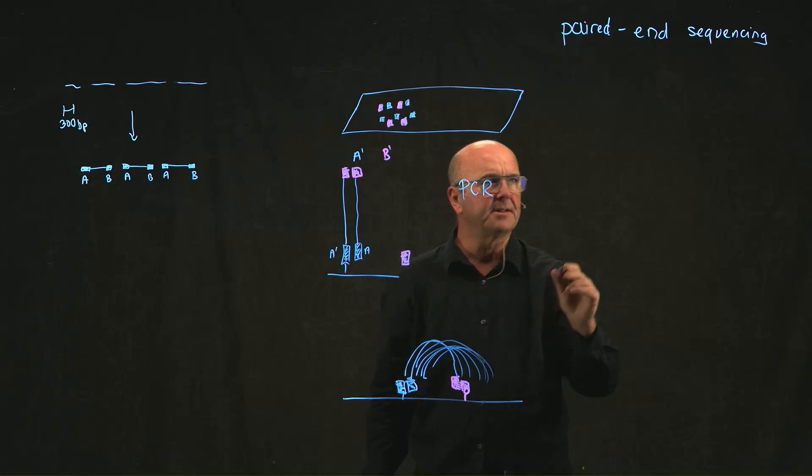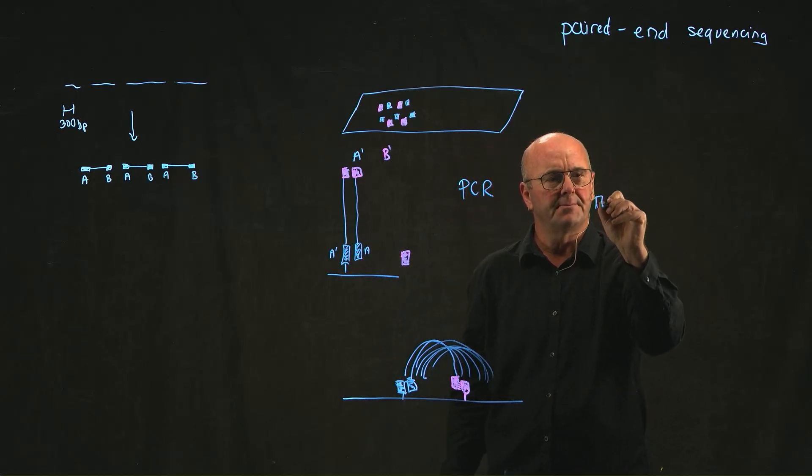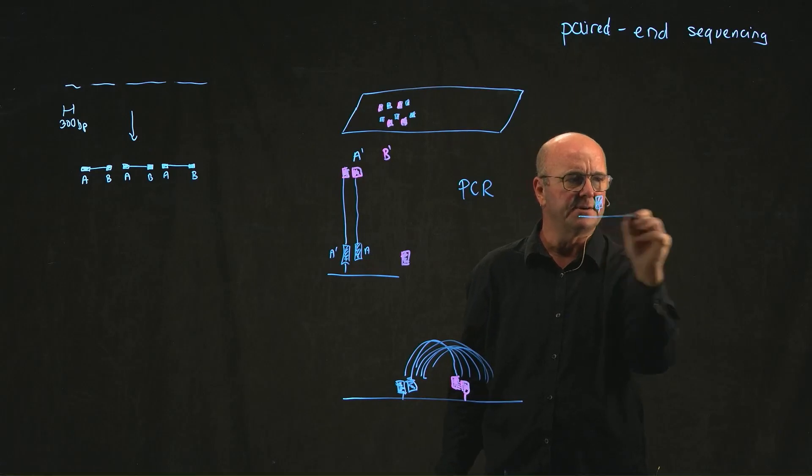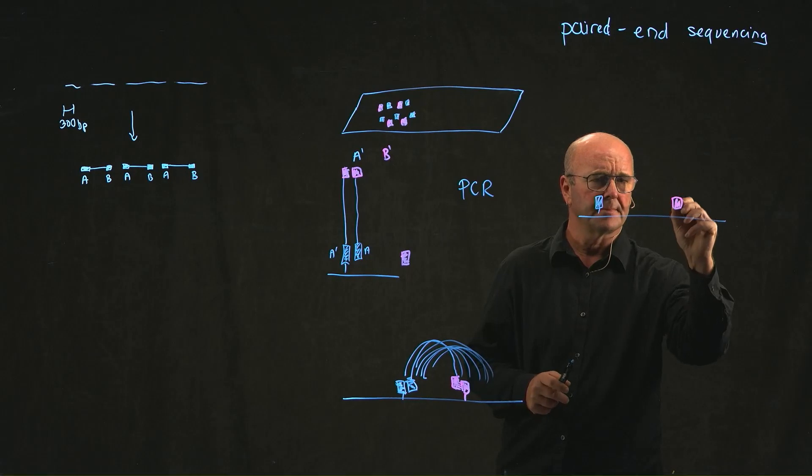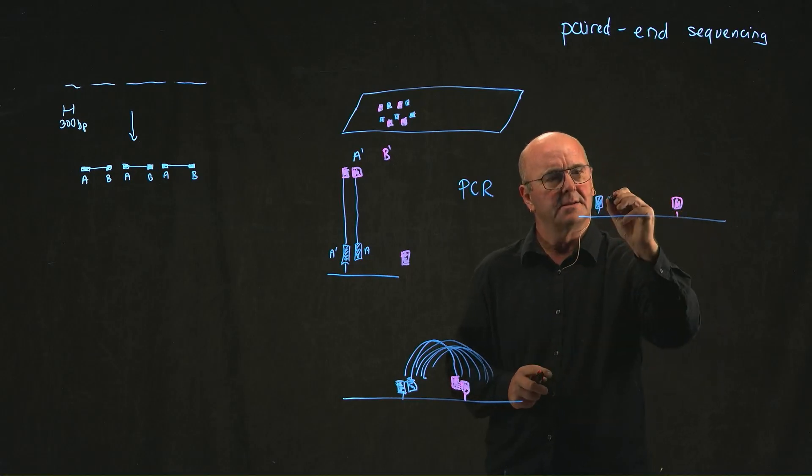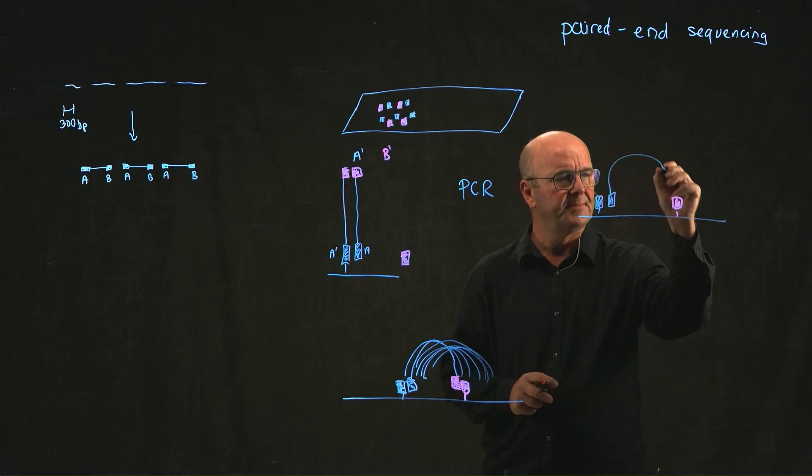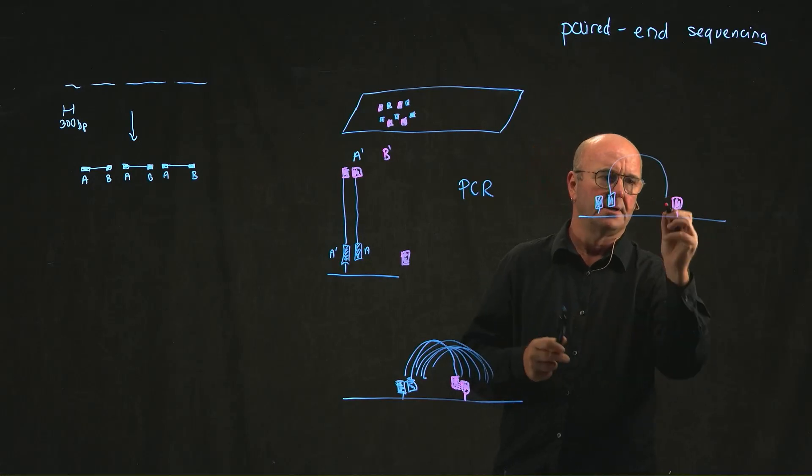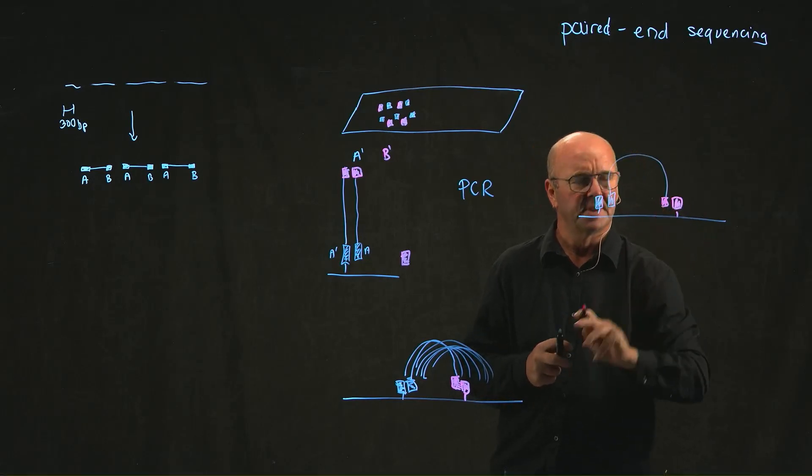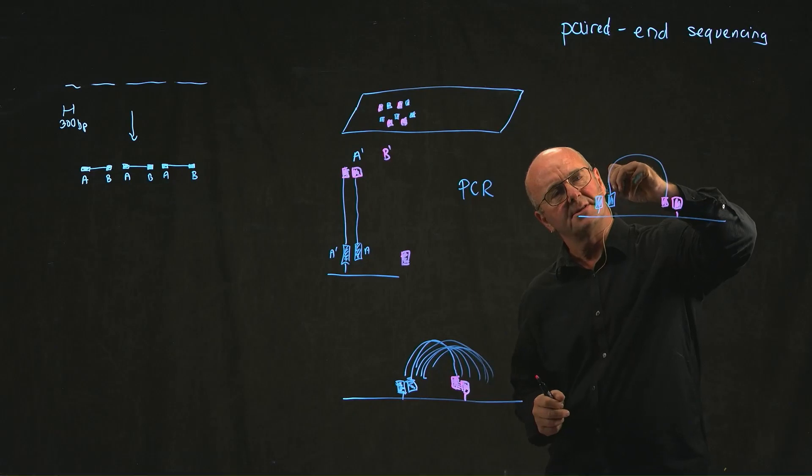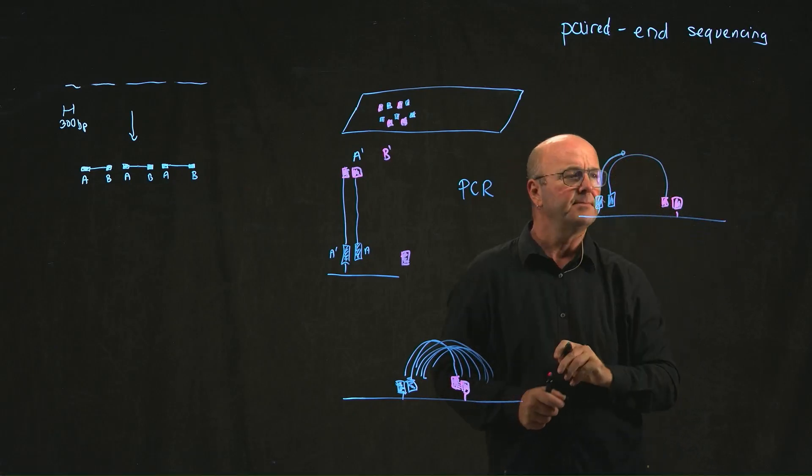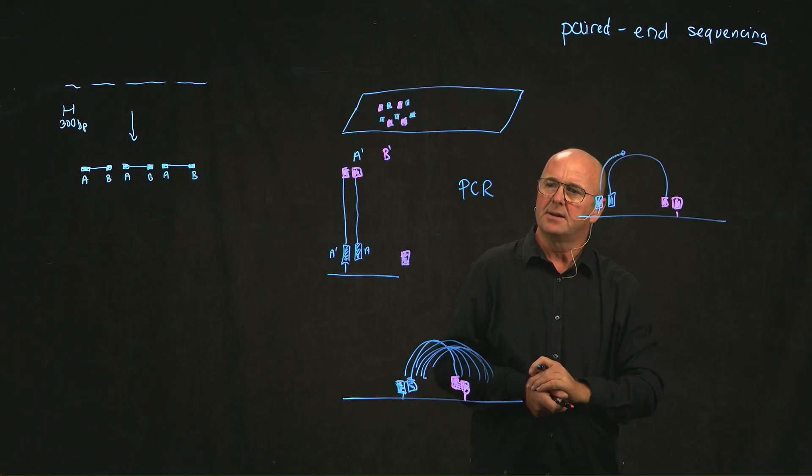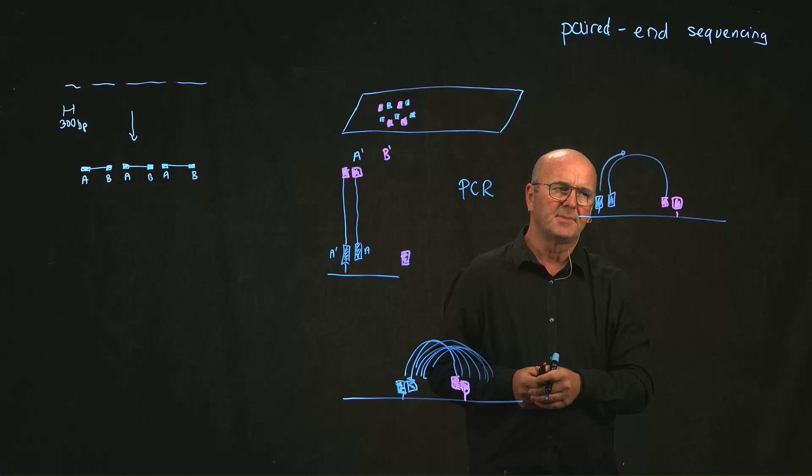We have A at one end and B at the other. And so we can just take a look at one strand of that. So here's our DNA making a little bridge. And so if we sequence starting here in this direction, we'll generate the sequence of one end of the DNA.